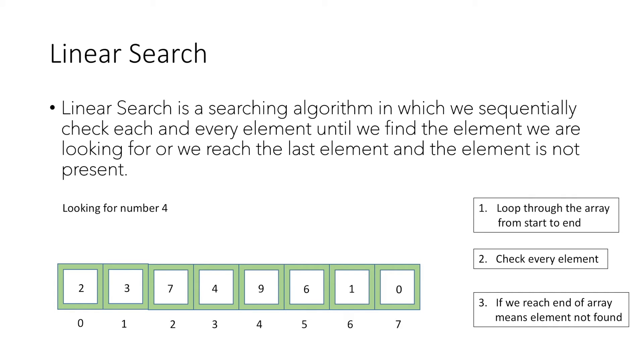We start traversing the array from the beginning and check the value at every index if it is equal to 4. At index 0, the value is 2 which is not equal to 4, so we move on to the next element.